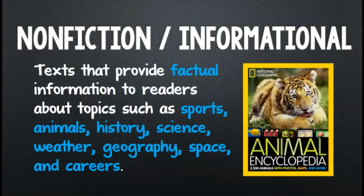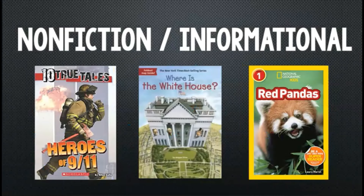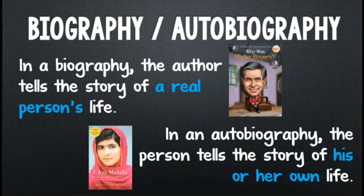Finally, our third main genre category is nonfiction, or informational texts, which are texts that provide factual information to readers about topics such as sports, animals, history, science, weather, geography, space, and careers. Examples of this genre include books like 10 True Tales: Heroes of 9/11, Where is the White House, and Red Pandas. Subgenres of nonfiction include biography and autobiography. In a biography, the author tells the story of a real person's life. In an autobiography, the person tells the story of his or her own life.